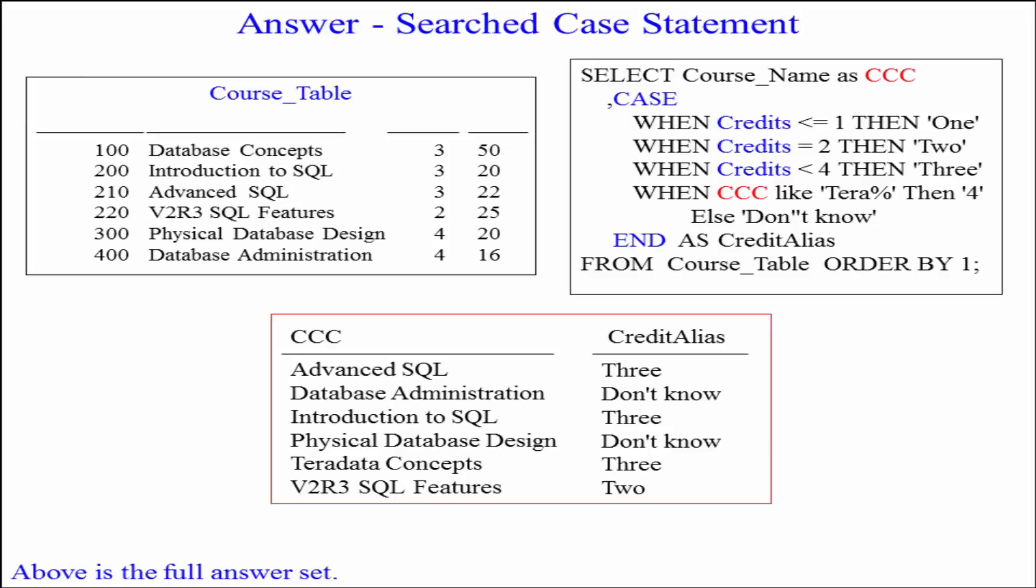Now, it came to the second one, which was database administration. And that was four credits. So they said, is it 1? No. 2? No. 3? They go, no. Is it like Terra? No. So it fell through to our else statement.